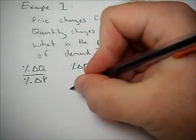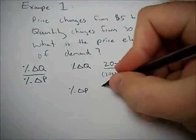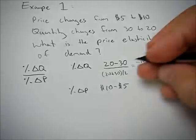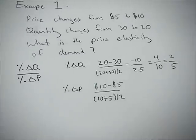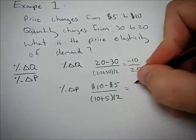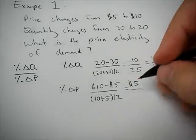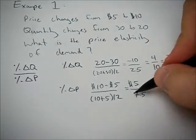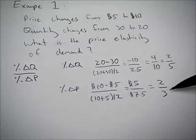Now we need to find the percent change in price using a similar method. We'll start off with our ending dollar amount of $10, subtract our initial dollar amount of $5, and divide by the average: 10 plus 5 divided by 2 gives us 7.5. So we get $5 over $7.50, and that gives us 2 thirds. So our percent change in price is 2 thirds.